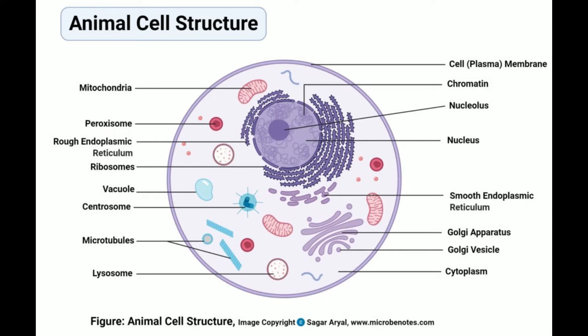Appendages: Many prokaryotic cells have cell appendages that protrude from the cell surface as flagella, pili, and fimbriae. Flagella are the most common appendages and are tail-like structures that assist the cell in moving around. Fimbriae are thin filamentous structures used to stick cells to various surfaces. Pili are longer filaments with different roles in different cells; for example, sex pili hold two cells together as they transfer DNA molecules by the process of conjugation.